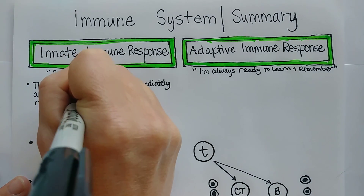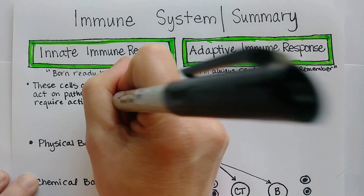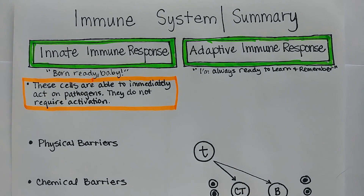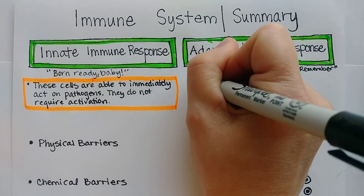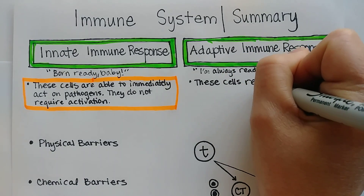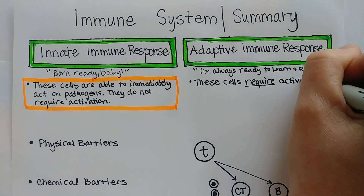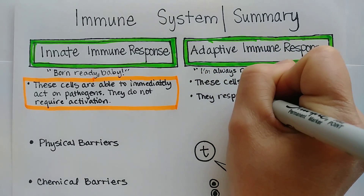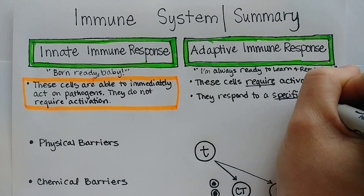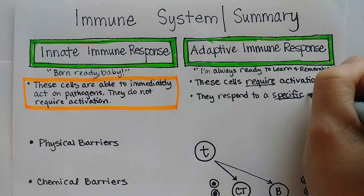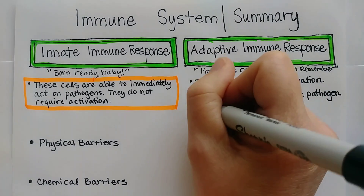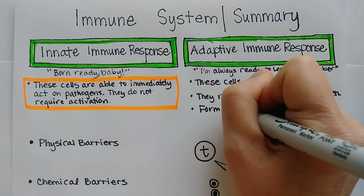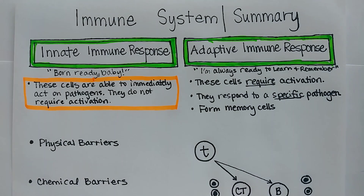The innate immune system does not require activation — that's a key idea to compare with the adaptive immune response. The adaptive immune response does require activation; the T and B cells require activation. A second point is that they respond to a specific pathogen, not just anything strange the way the innate response would. Third, once they respond and eliminate the pathogen, they form memory cells, which will protect you from getting sick with that pathogen hopefully ever again.